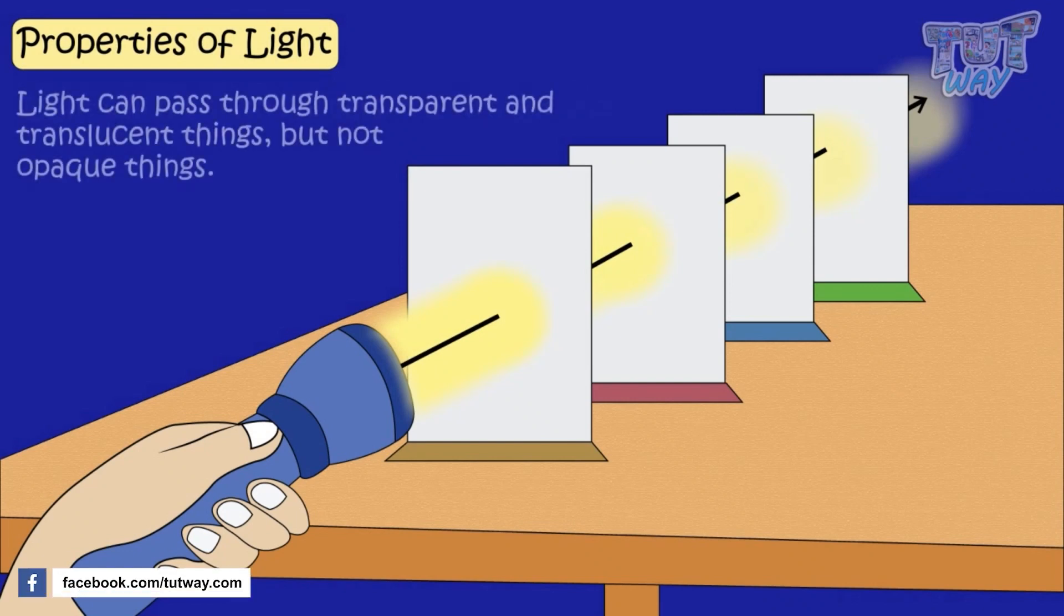And light can pass through transparent and translucent things, but not opaque things.